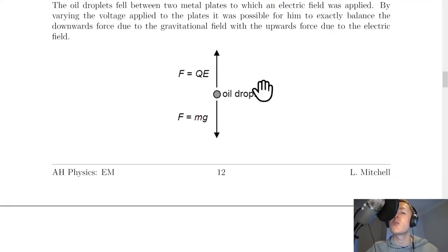Here's a free body diagram showing the forces acting on the oil droplet. We've got the gravitational force F equals MG, essentially just the weight W equals MG downwards. And we've got the force upwards due to the electric field which is the electric force F equals QE. These forces were exactly balanced and at this point the oil droplet became stationary.